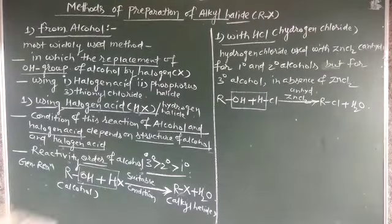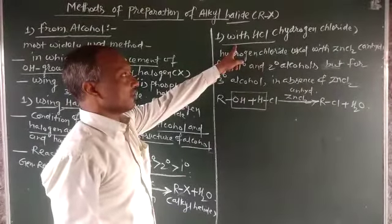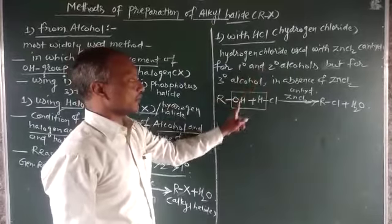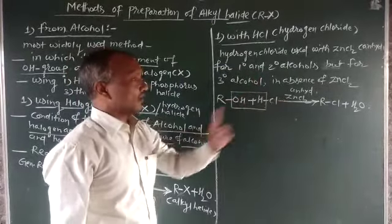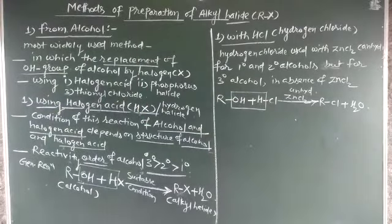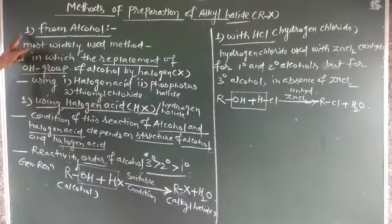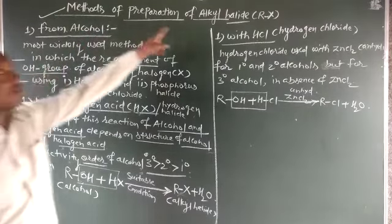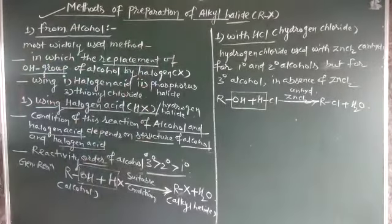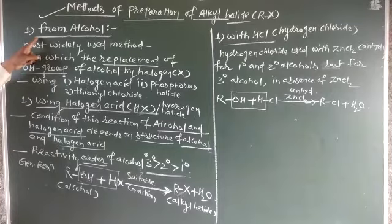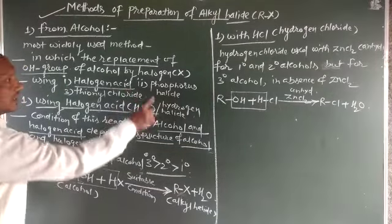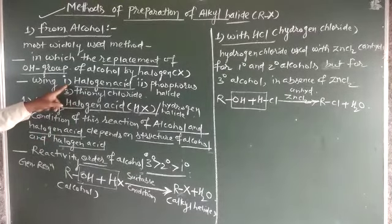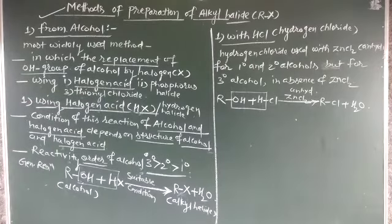So using HCl with anhydrous ZnCl2 is for primary and secondary alcohols only; for tertiary alcohols, ZnCl2 is not needed. This is the halogen acid method for preparation of alkyl halides from alcohols. The remaining methods — phosphorous halide and thionyl chloride — will be seen later.